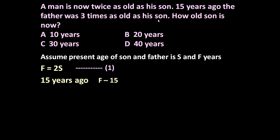At that time, he was 3 times as old as his son. Means this is equal to 3 times of son age at that time. At that time, son age was S minus 15 because it is 15 years ago.